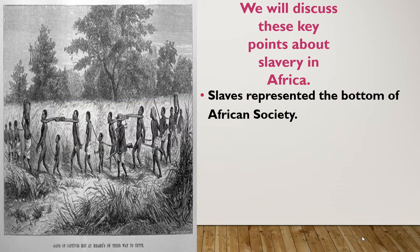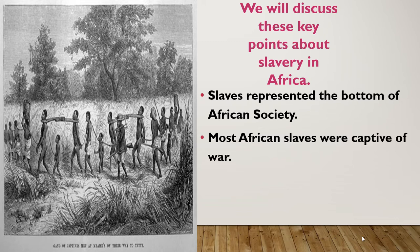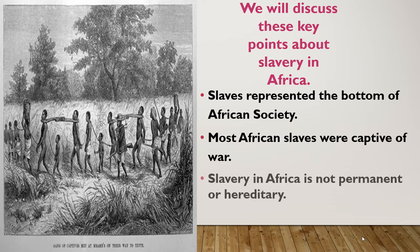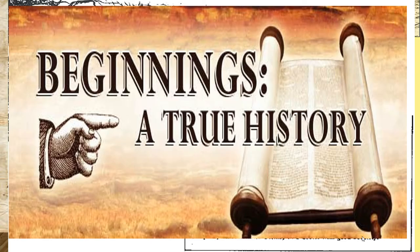These are the key points I want to focus on today: slaves representing the bottom of African society; most slaves were captives of war; slavery in Africa is not permanent, nor is it hereditary; and assimilation took place the same way it did with the Native Americans — when the first settlers came over, they wanted the Native Americans to assimilate. Assimilation is still rampant in the slave part of the colonies. So let's start at the beginning and look at our true history.